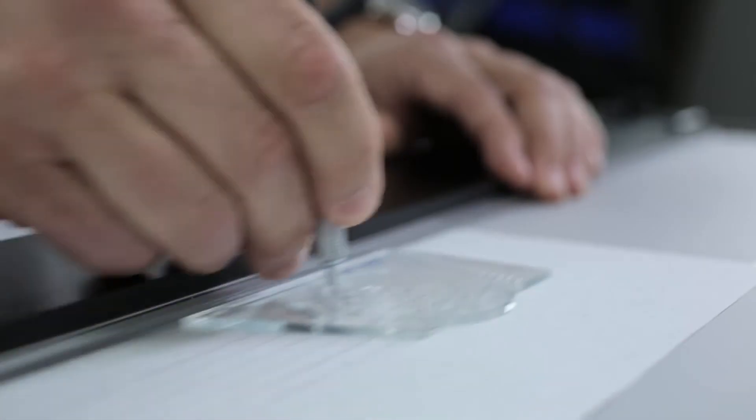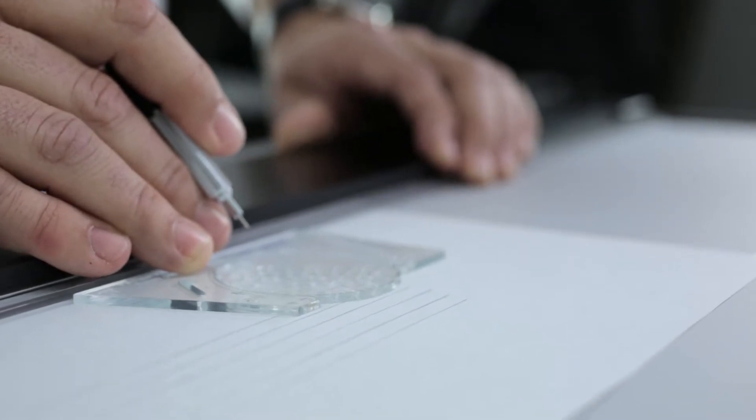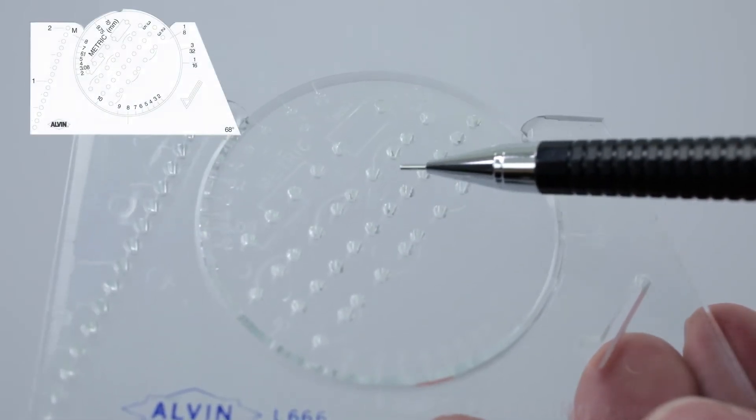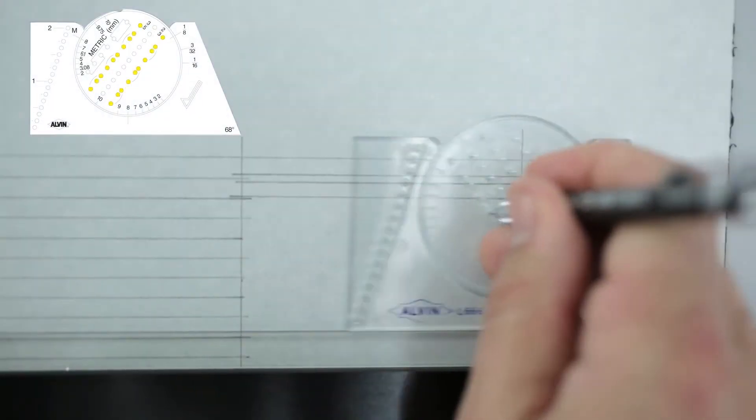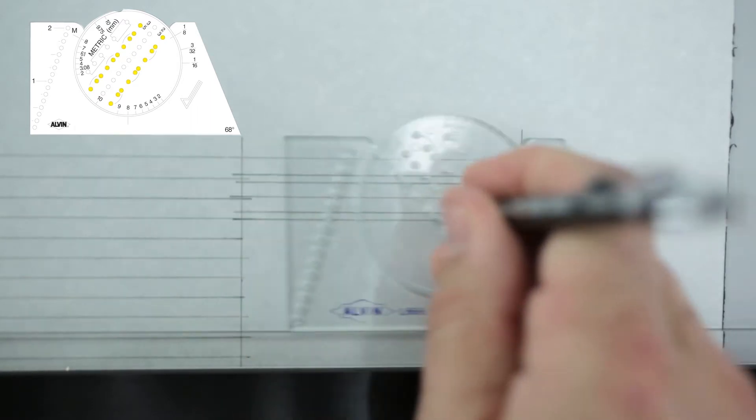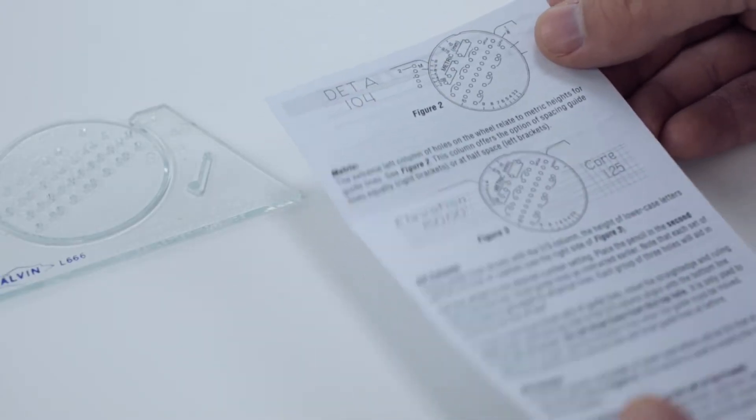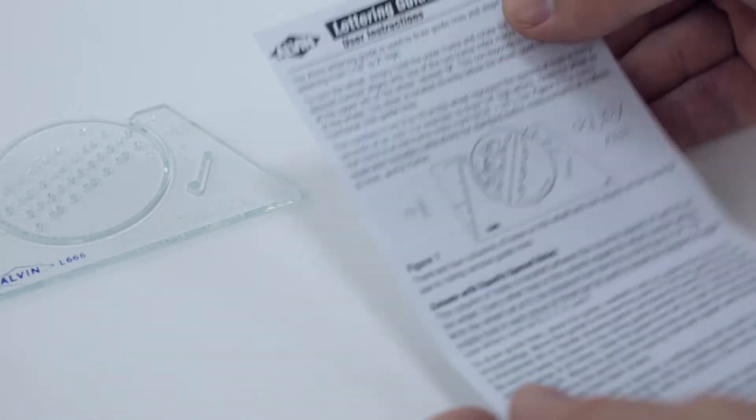When creating technical lettering or doing calligraphy, this can come in very handy. Two of the columns help create guides for lowercase letters specifically. Most tools come with a great instruction sheet for all the configurations.